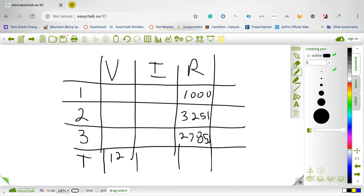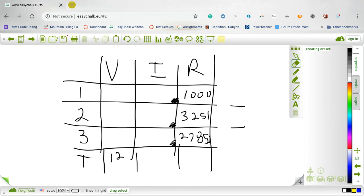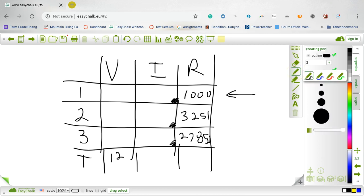I'm going to mark what we're looking for. I color in a corner of the square that we're looking for. We're looking for the current through each of those resistors. Now the trick or the thing that makes the VIR square nice is the way we can move around it.